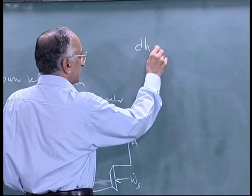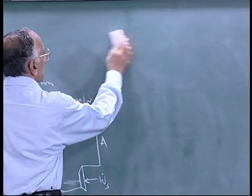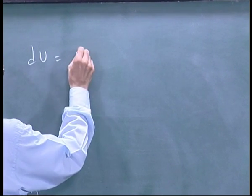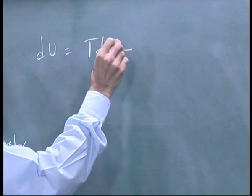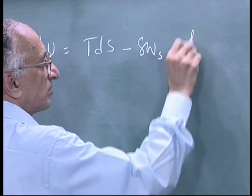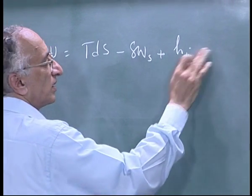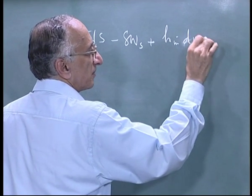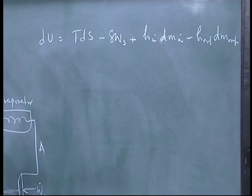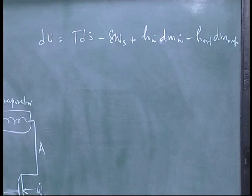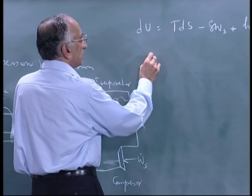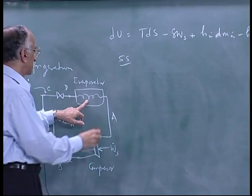The basic equation: all of these are treated as flow systems and at steady state. I will write the open system equations for each of these. For each it is an open system, so du equals Tds minus delta Ws plus Hn dmn, considering reversible operation right now.